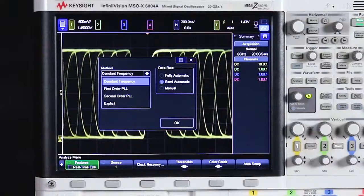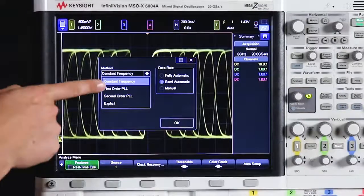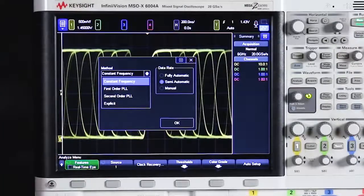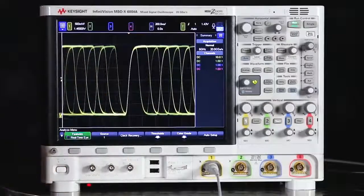So again, an explicit clock is when you have that clock signal that you're actually able to plug into one of the channels. Constant frequency is what you use when you're working with an embedded clock. And we'll talk about the first and second order PLLs in the next video. So let's leave it at constant frequency and select OK.